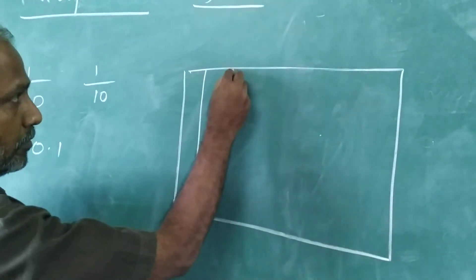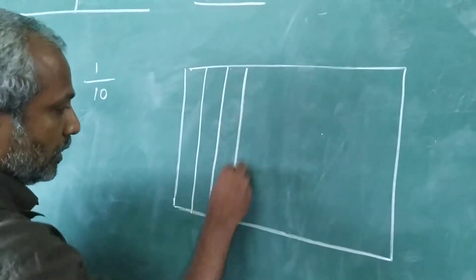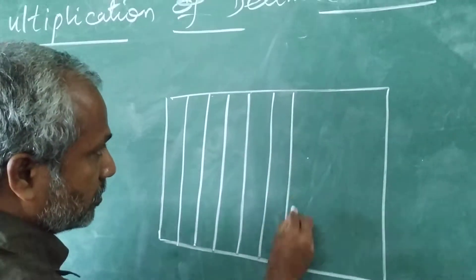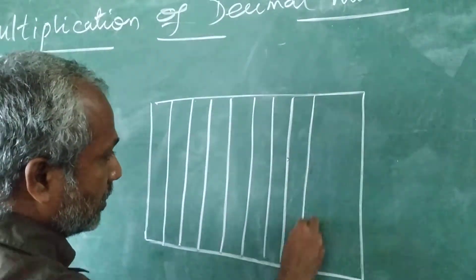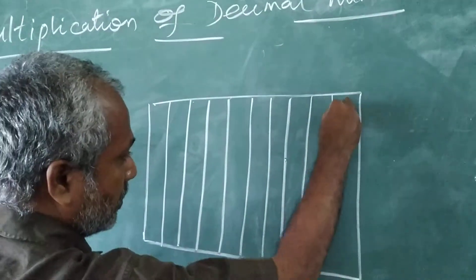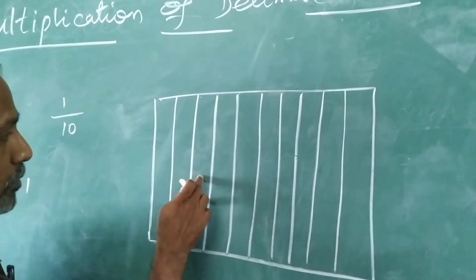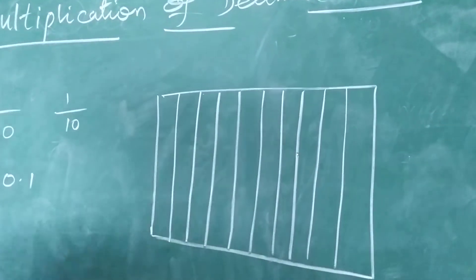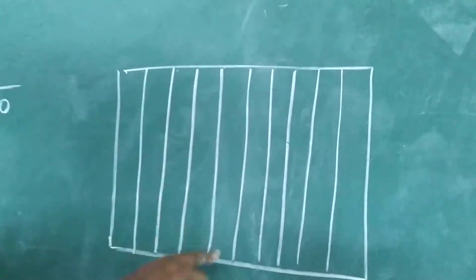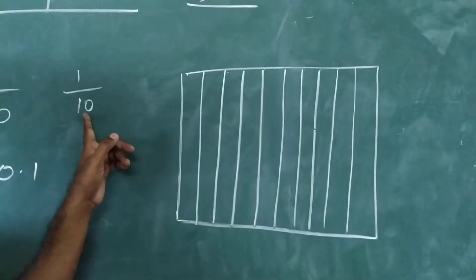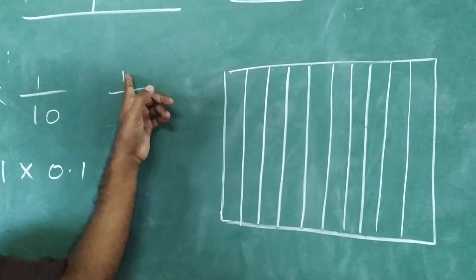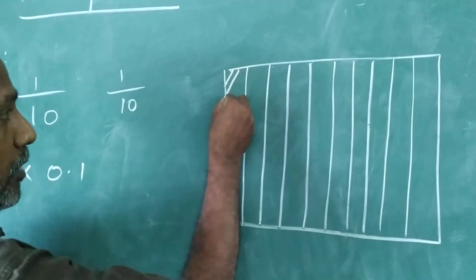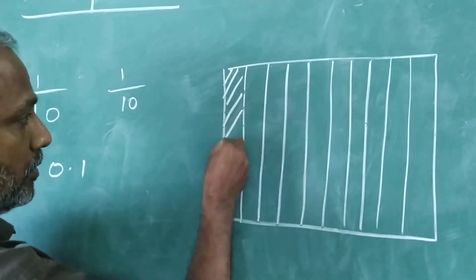We count 10 equal parts: 1, 2, 3, 4, 5, 6, 7, 8, 9, 10. This is actually 10 equal parts. Among the 10 equal parts, I need 1 part. So I am going to shade 1 part out of 10.